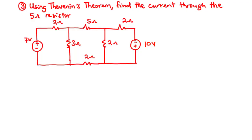Now let's continue with Example 3. Using Thevenin's theorem, find the current flowing through the 5 ohms resistor. So as usual, what we are going to do first is to remove this 5 ohms resistor, mark the terminals, and find Vth. So let's redraw the circuit.